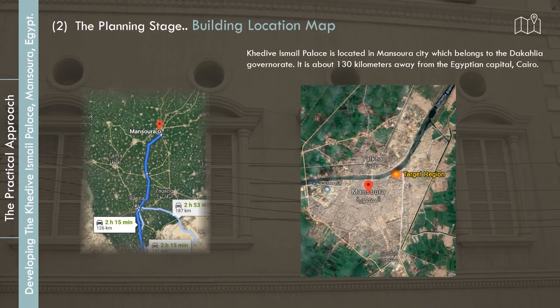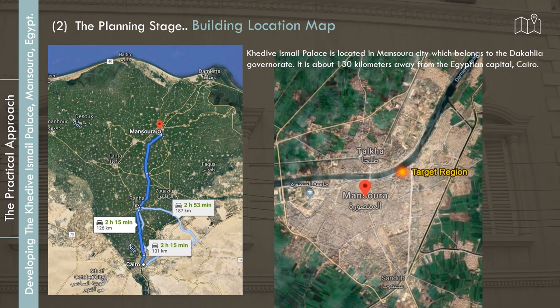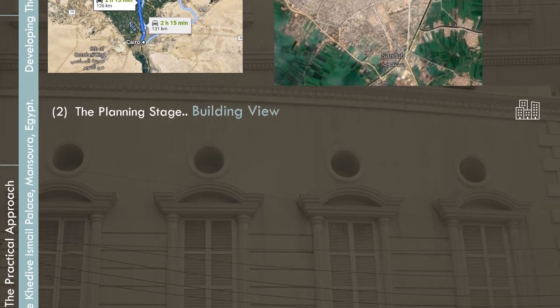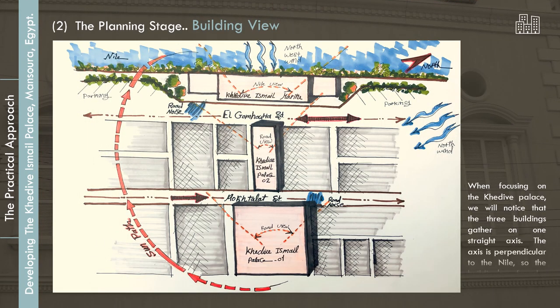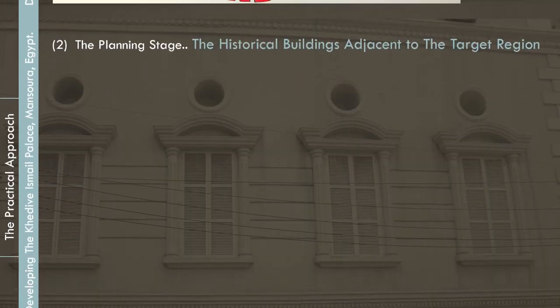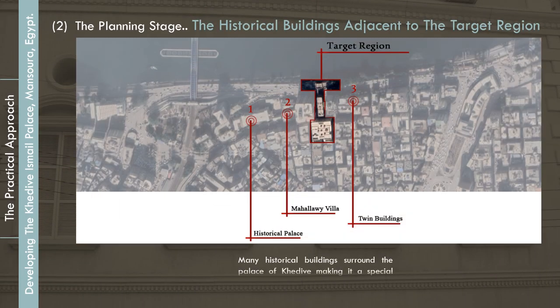Khadiva Ismail Palace is located in Mansoura City, which belongs to the Dakahlia governorate, about 130 kilometers away from the Egyptian capital, Cairo. Focusing on the Khadiva Palace, three buildings are gathered on one straight axis perpendicular to the Nile, so the buildings' facades overlook the Nile. Many historical buildings surround the palace, making it a special historical area in Mansoura City.